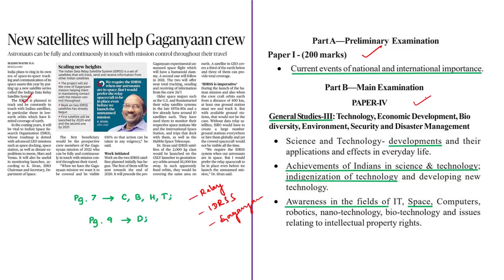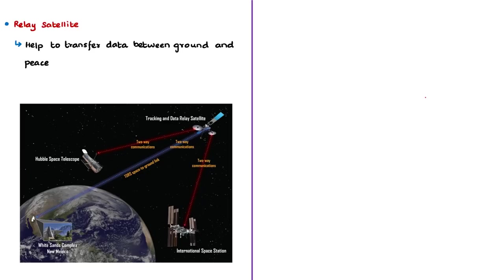Now let us try to understand the concept of a relay satellite, which is similar to a relay race in which runners pass the baton to the next runner to run the next leg of the race. Similarly, the relay satellite works like relay rays but with satellites — that is, with a source satellite, then a relay satellite, then to the ground station. Satellites in orbit cannot pass their information to ground stations if the satellite does not have a clear view of the ground station. Therefore, a relay satellite serves as a way to pass the satellite's information to the ground station.